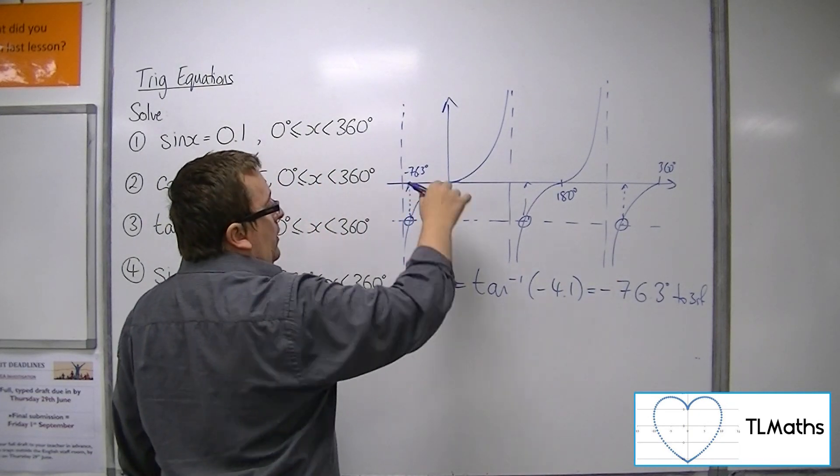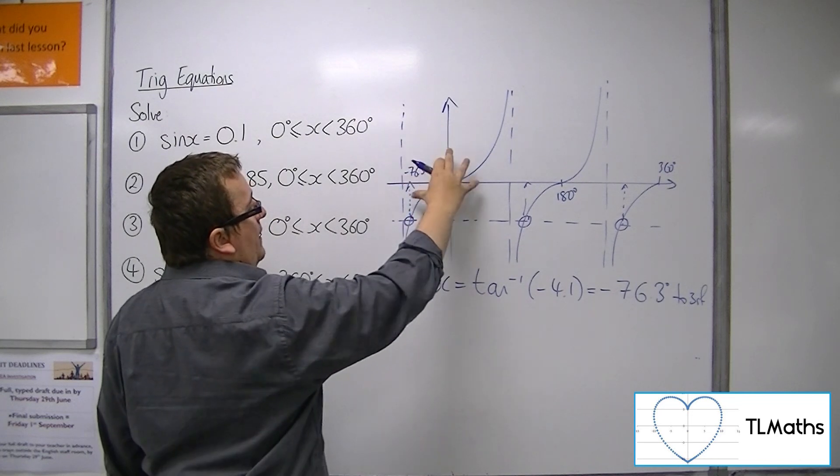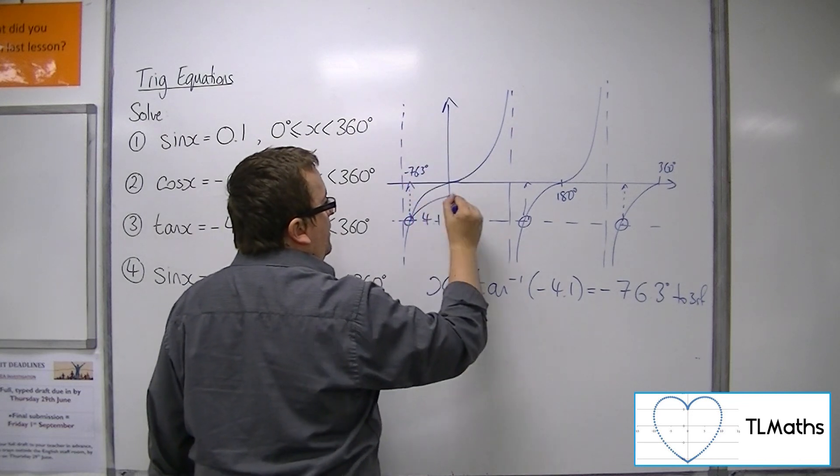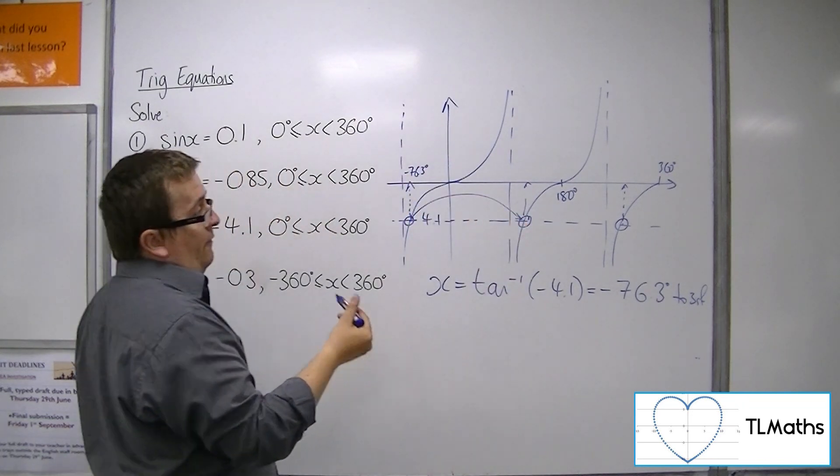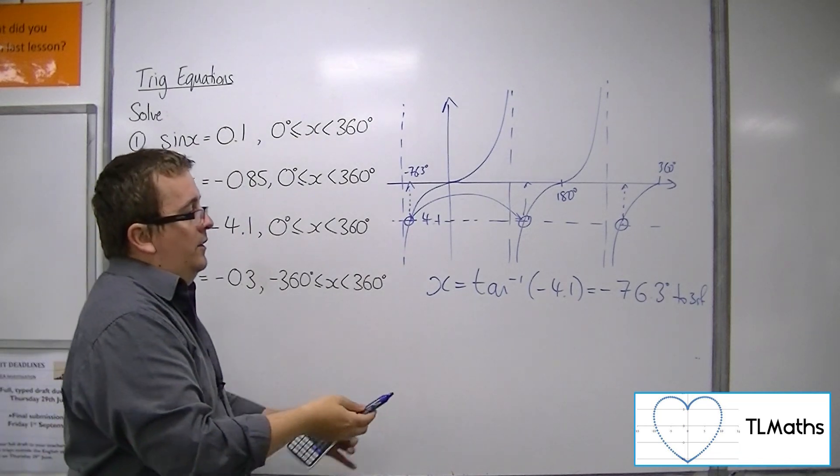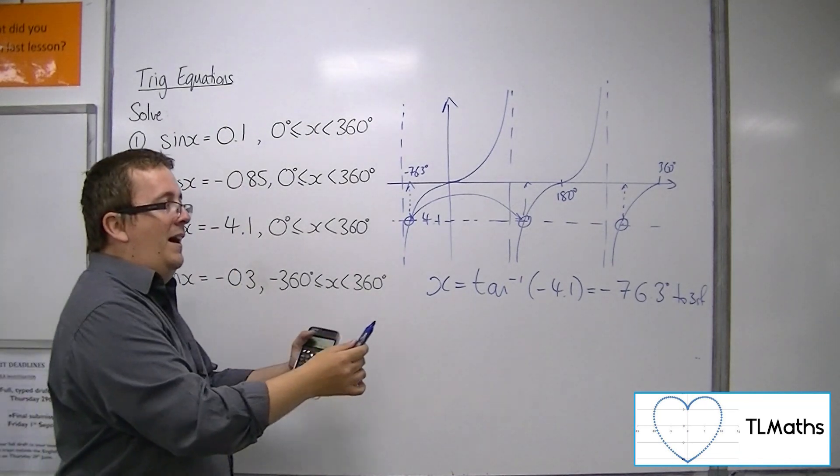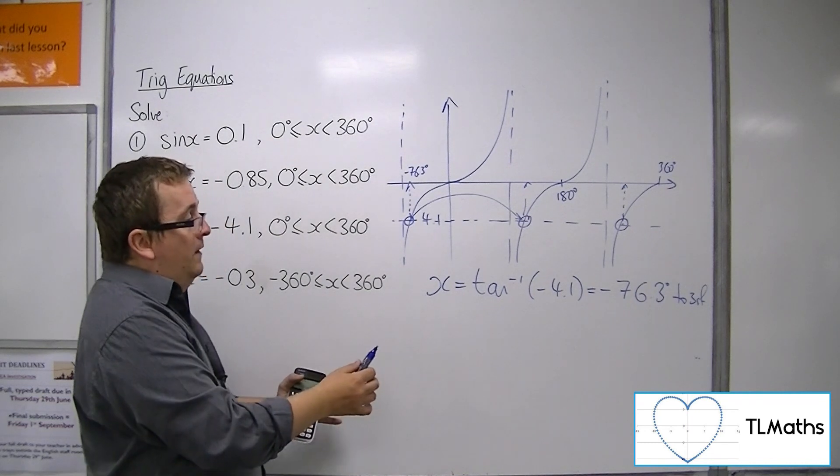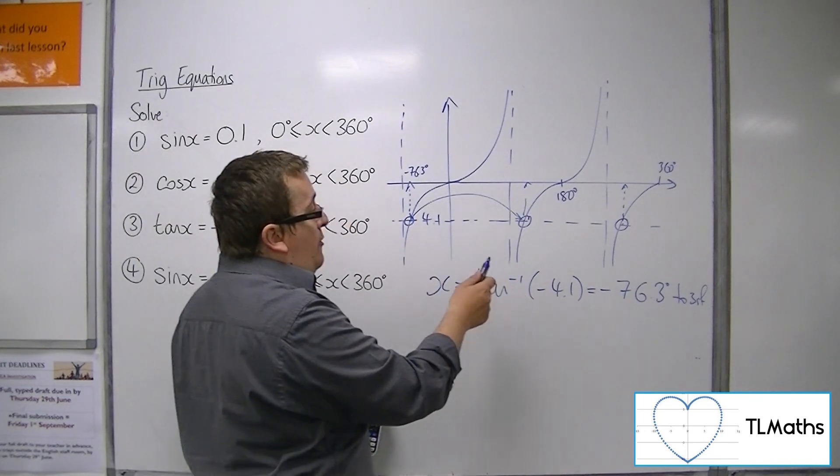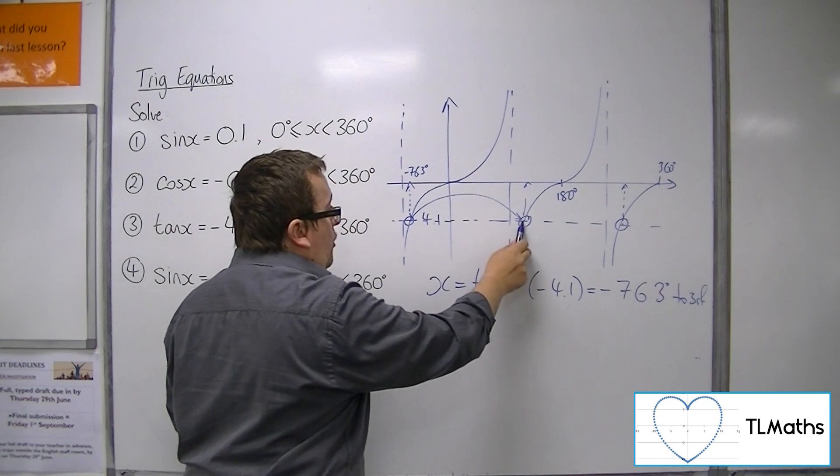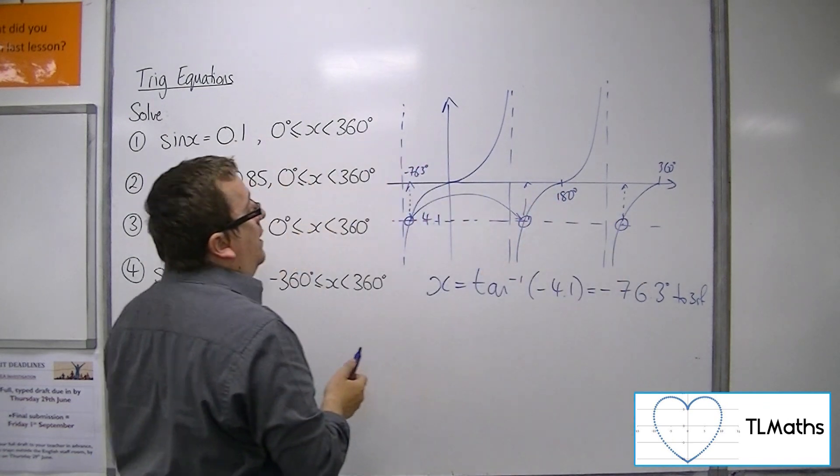Now because tan has this period of pi, you can just add pi—oh sorry, of 180. I should make sure, 180 degrees. So tan has this period of 180 degrees, and so you can just add tan on to get the next one and then the next one.